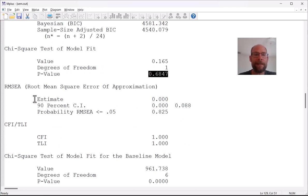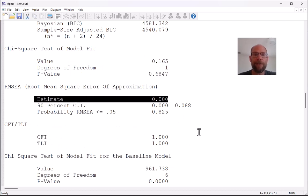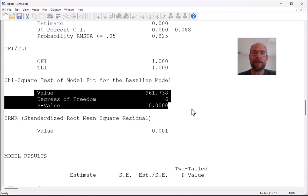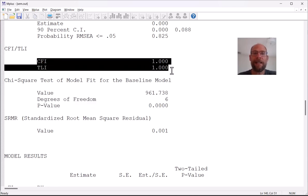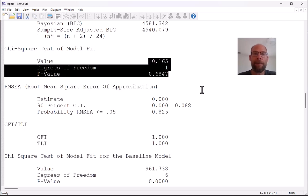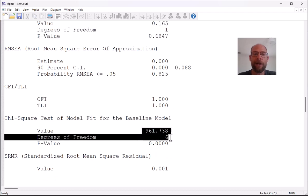The RMSEA is given and it's also looking good with a value of 0 and CFI/TLI are 1.0 which also indicates a good fit. We also get the chi-square test of model fit for the baseline model which is the so-called null model where Mplus assumes that variables are not correlated, that the covariances are all 0, and this is used as a baseline or null model to compute the CFI and TLI indices and also to compare to our model chi-square.